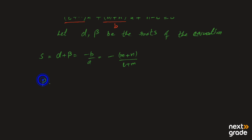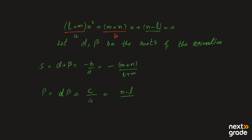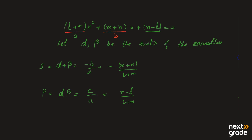تو sum of roots = minus(m + n) over (l + m). اسی طرح product of roots کی بات کریں تو P is equal to c over a, یعنی alpha × beta = c over a. اب c کی value دیکھیں — یہ constant term ہے جن کے ساتھ x نہیں ہے، so c = (n - l)۔ اور a کی value l + m ہے۔ تو product of roots = (n - l) over (l + m). اس طرح سے ہم sum اور product of roots find کر سکتے ہیں without solving the equation.